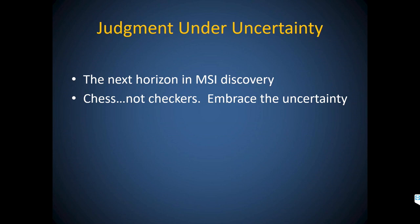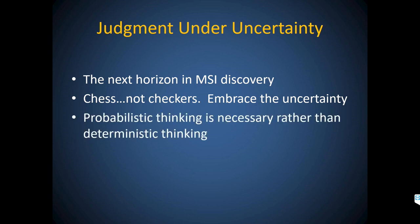Judgment under uncertainty is the next horizon in musculoskeletal infection discovery. This is definitely chess, not checkers. We have to embrace this uncertainty — if we accept models that oversimplify the question and allow us to get to answers before we really should be deriving them, we'll be lost, as I see quite commonly in my active practice.